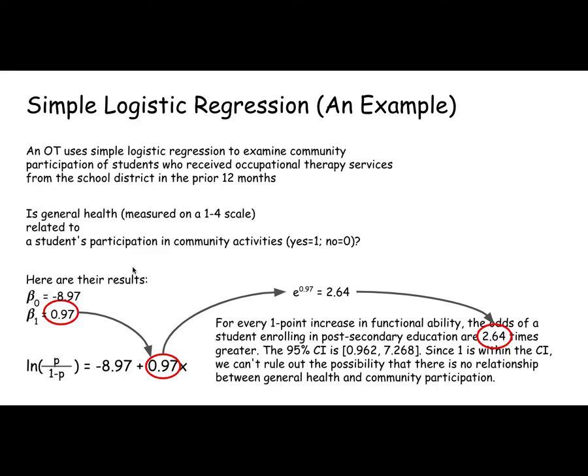And they collect the data. Here's the results they get. So their beta is 0.97. They do the exponentiation, so their odds ratio is 2.64. And when they calculate the confidence interval on this odds ratio, it stretches from 0.9 to 7.2.